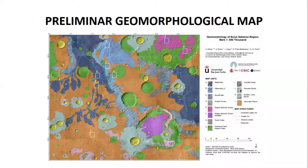This is the layout of our geomorphological map. The base map is composed by CTX images. We also use THEMIS infrared images and topography derived from MOLA and HRSC. We draw and compile this 1:500,000 scale preliminary geomorphological map using ArcGIS.